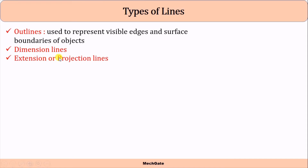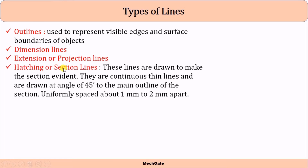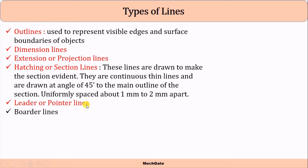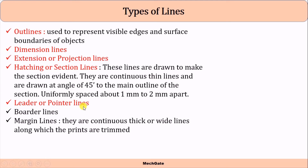Extension or projection lines are used to project from certain points. Then hatching or section lines — these are continuous thin lines drawn at an angle of 45 degrees to the main outline of the section, uniformly spaced about 1 mm to 2 mm apart. Then next are leader or pointer lines.